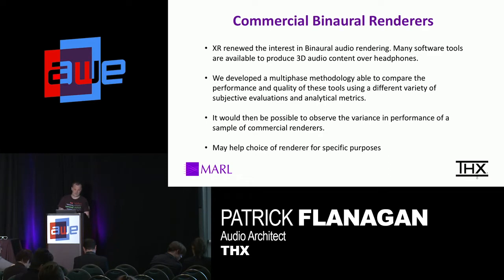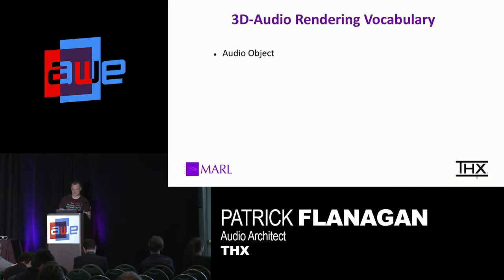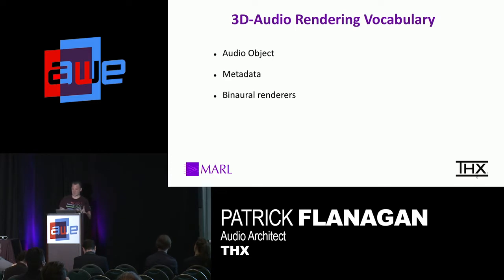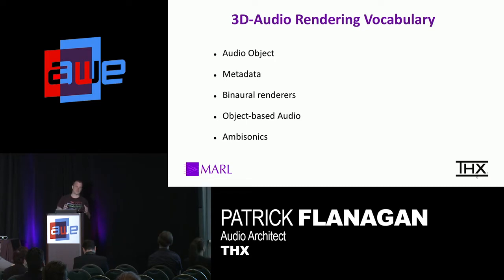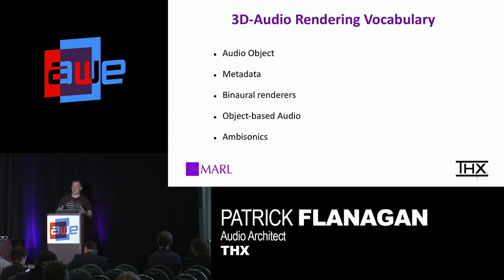And if you're designing content, then maybe that will inform you which renderer to choose or how to design your content differently. So for 3D audio rendering vocabulary: an audio object is a mono waveform that has metadata associated with it that describes its time, distance, and movement through space. Binaural renderers transform stimuli in a 3D space and add HRTF cues to give you a sense that the sound is coming from outside of your head. Object-based audio is also a mono cue with the ability to move in time and space. And ambisonics is a spherical-based representation of sound — basically the amount of samples or microphones inside a space to capture the audio information of that entire space.